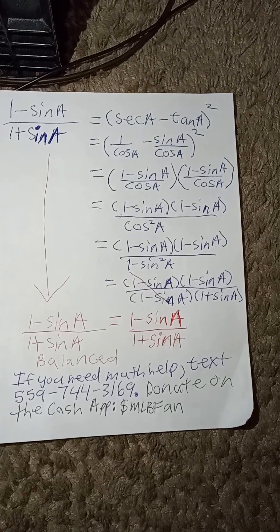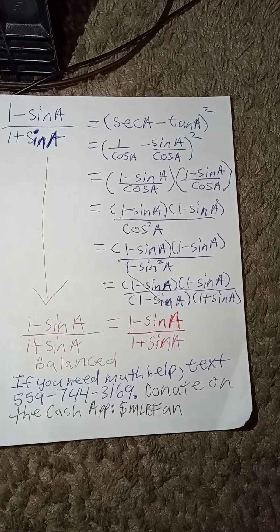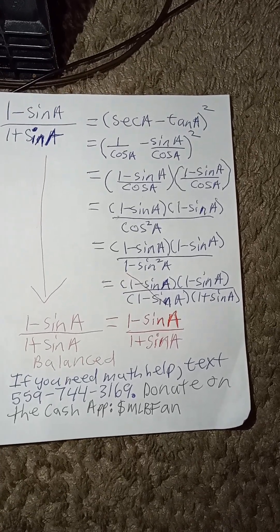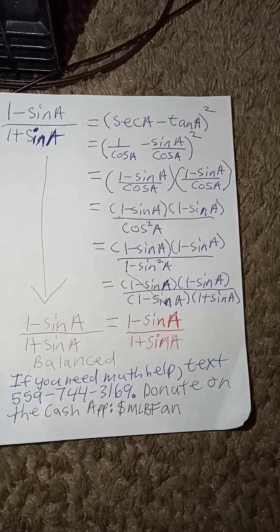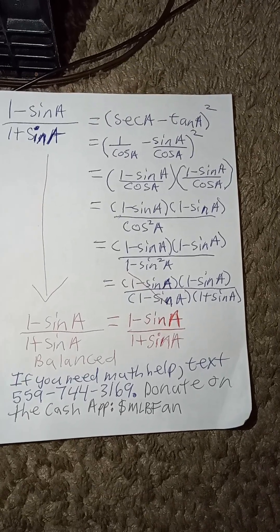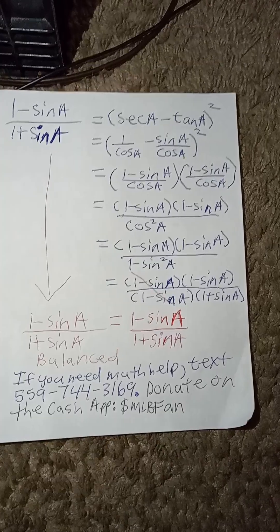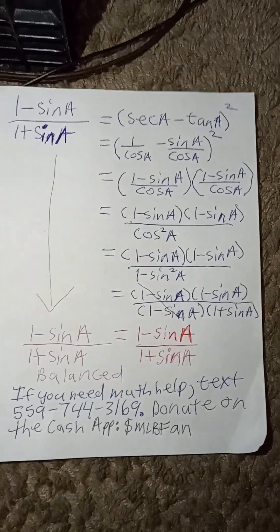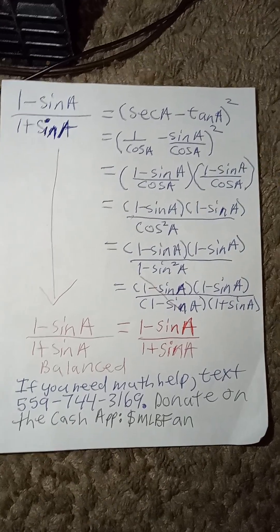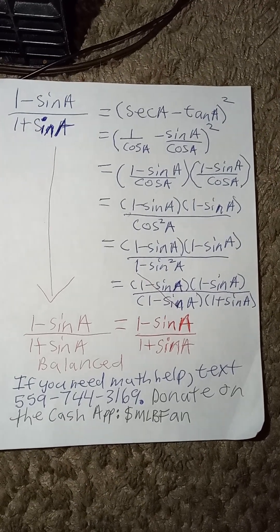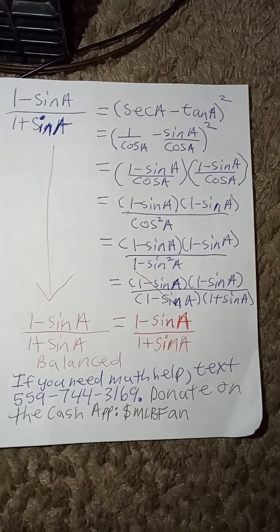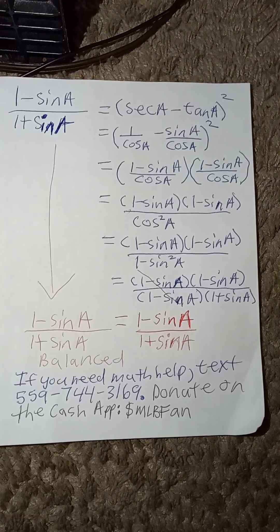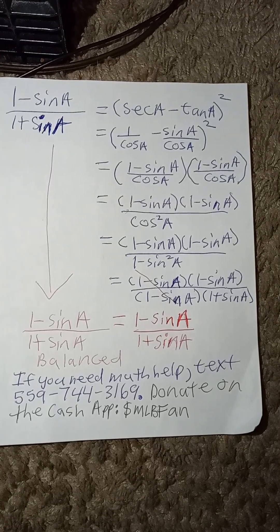So, now we need to factor the denominator. We do one trigonometric conversion: cosine squared of a is equal to 1 minus sine a squared. So we have 1 minus sine a times 1 minus sine a, divided by 1 minus sine squared a.